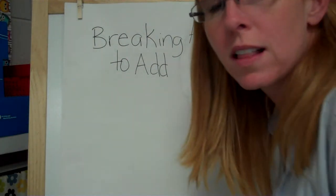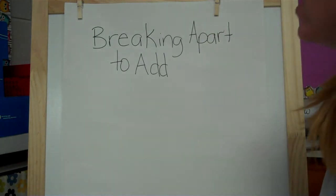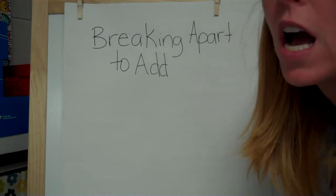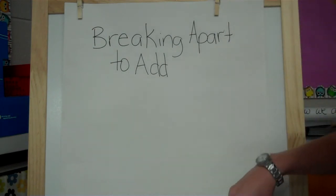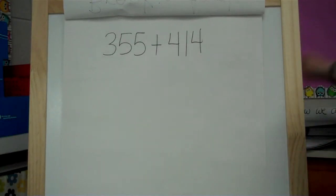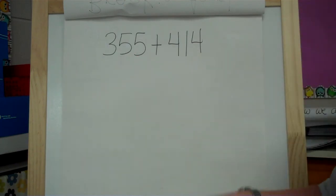Alright, welcome to our next math class. Today we're going to be talking about breaking apart numbers to add. We're trying to give you lots of strategies to add numbers easily and quickly and without making mistakes, hopefully. So today we're going to break apart some numbers. Alright, our first example we're going to look at is 355 plus 414.